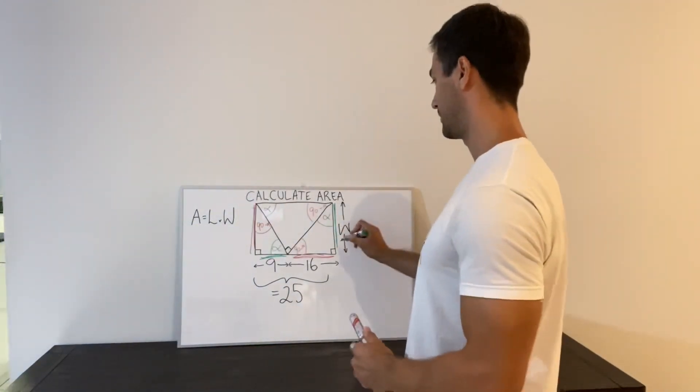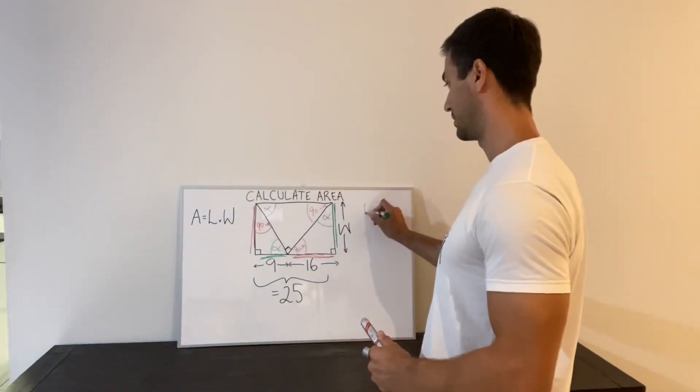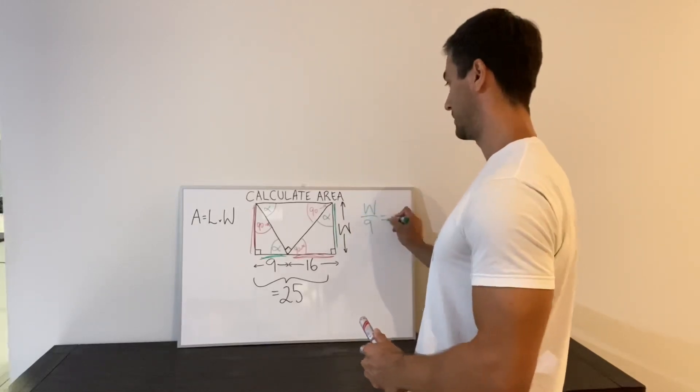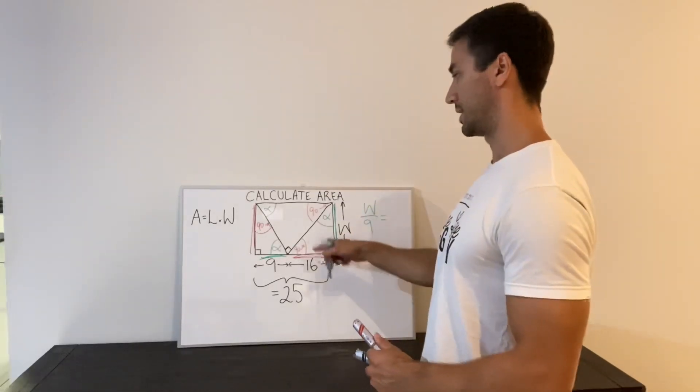Alright, so we're going to have that w over 9 should be equal to 16 over w.